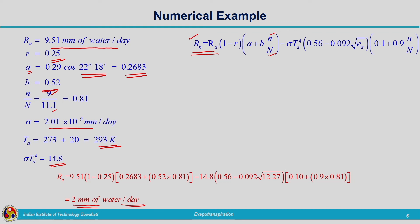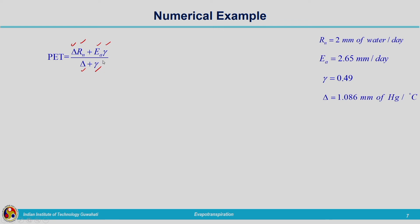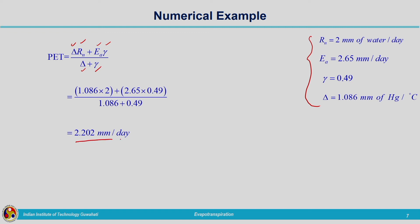With Rn = 2 mm/day, all parameters in Penman's equation are now known: delta, Rn, ea, and gamma. Substituting into PT = (delta × Rn + ea × gamma) / (delta + gamma), the potential evapotranspiration is calculated as 2.202 mm/day. So the potential evapotranspiration for the given location and data is 2.202 mm/day.